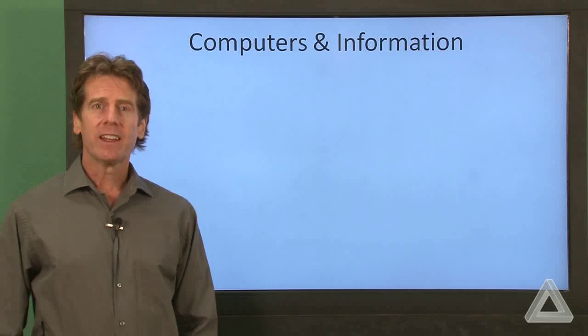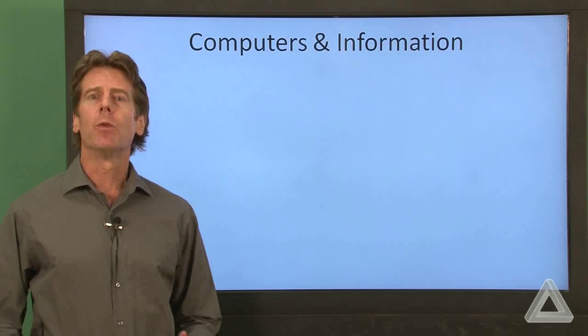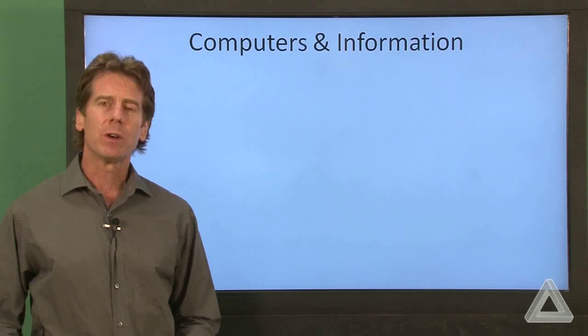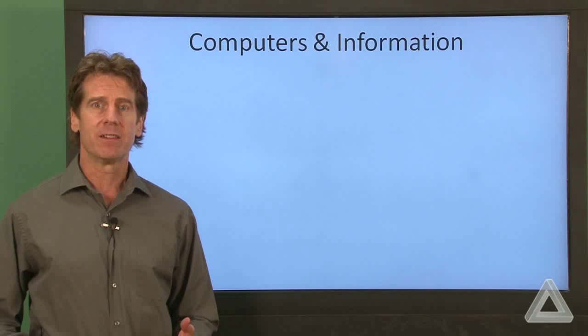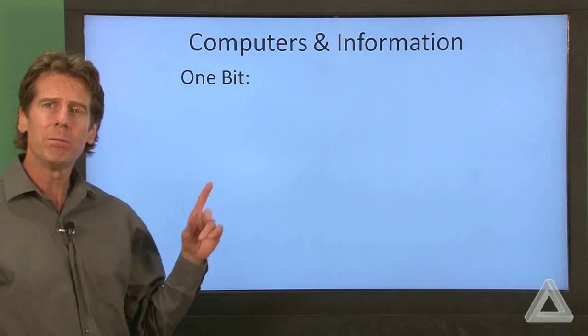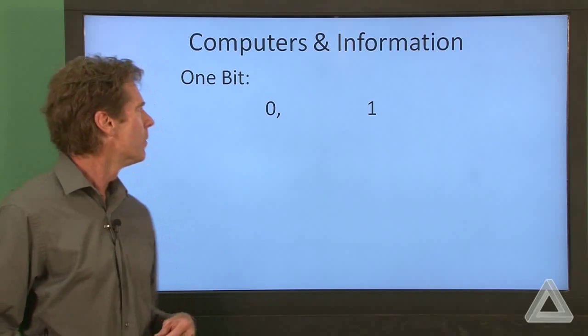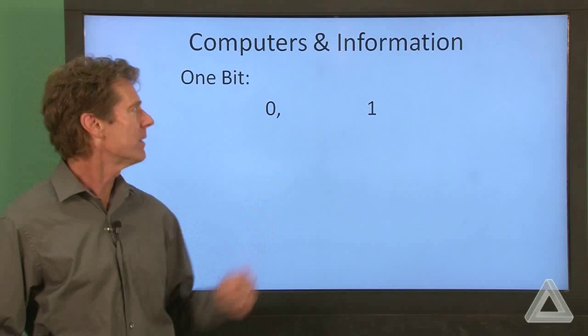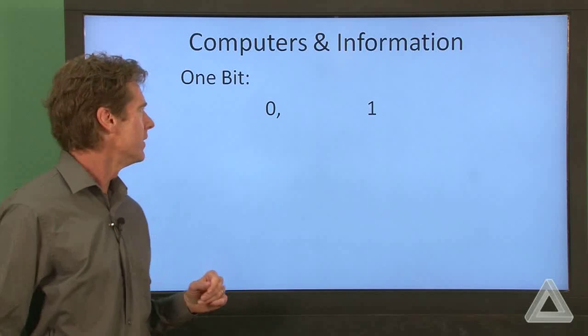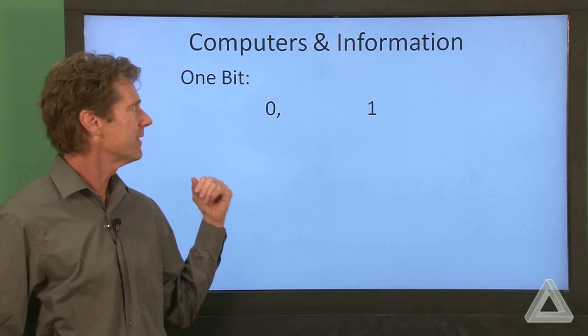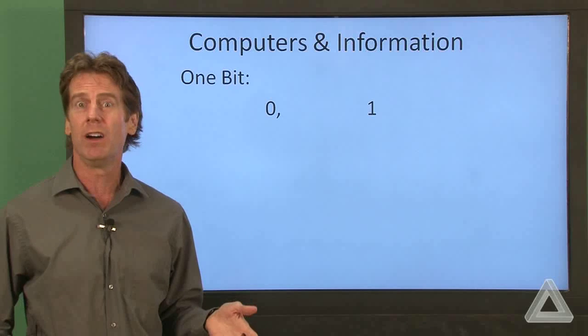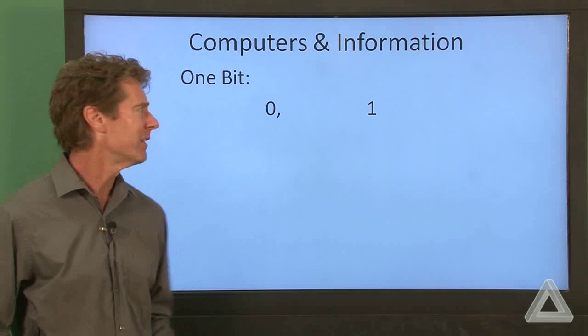Everything in the computer is in terms of ones and zeros. And what can we do with these ones and zeros? Let's start with a single bit. What can we do with that? Well, there they are. Zero and one are the two values that bit can take on. So it looks like we can count to one. And that doesn't seem very useful.